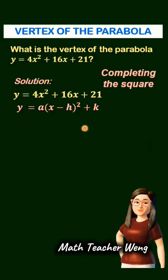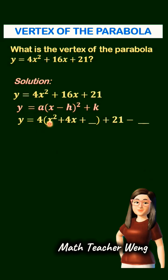So first, we factor out that coefficient 4 by dividing. This is equal to 4x squared divided by 4 is x squared. 16x divided by 4 is 4x.